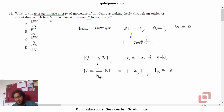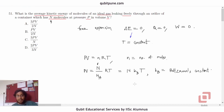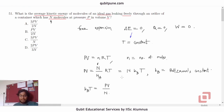kB is Boltzmann's constant — the ratio of the ideal gas constant and Avogadro's number. So we can write kB·T = pV/N.